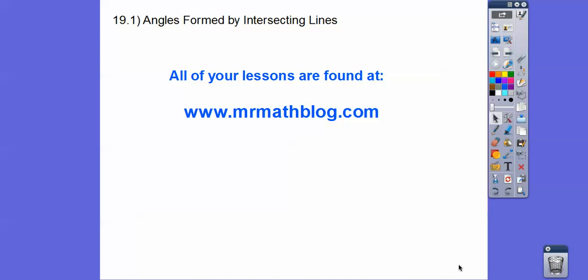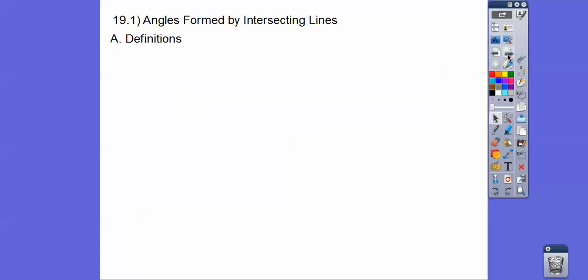Hey everybody, this lesson is called Angles Formed by Intersecting Lines. This is Module 19.1, and don't forget all your lessons can be found at MrMathBlog.com — click the Integrated Math 1 link at the top.